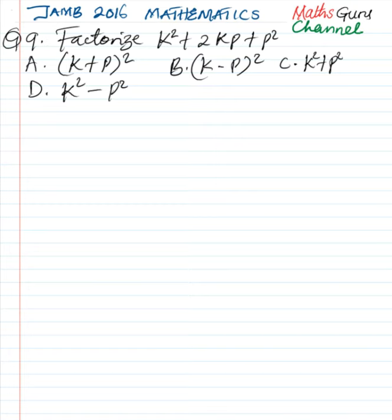So we simply have the expression k square plus 2kp plus p square.